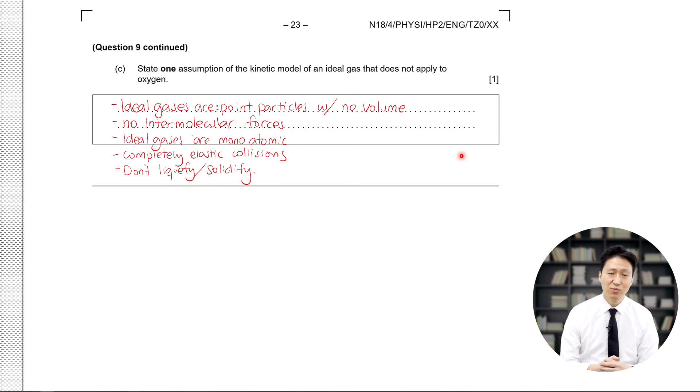Next, ideal gases are assumed to be monatomic. We know that oxygen is two atoms of oxygen bonded together into one molecule, so it's diatomic. Next, ideal gases assume all collisions are completely elastic, whereas collisions between real atoms and particles are not completely elastic. And lastly, ideal gases are assumed to not liquefy or solidify, which is not the case. Oxygen will liquefy and will solidify at different temperatures and pressures.